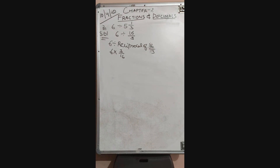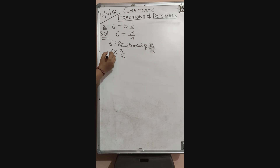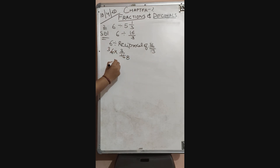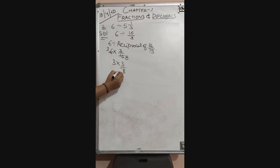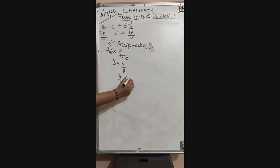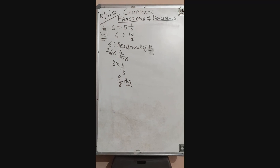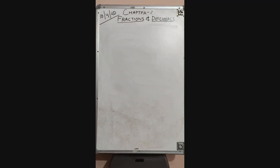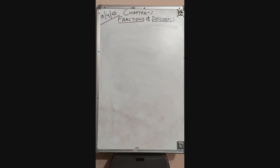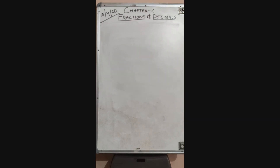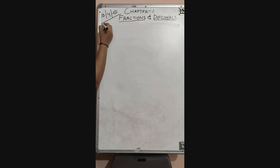We can first reduce it: 6 and 16 simplify — 6 divided by 2 is 3, and 16 divided by 2 is 8. So we get 3 multiplied by 3 upon 8. That gives us 9 upon 8, and this is the answer. Rule 2 is division of a fraction or mixed fraction by a whole number.